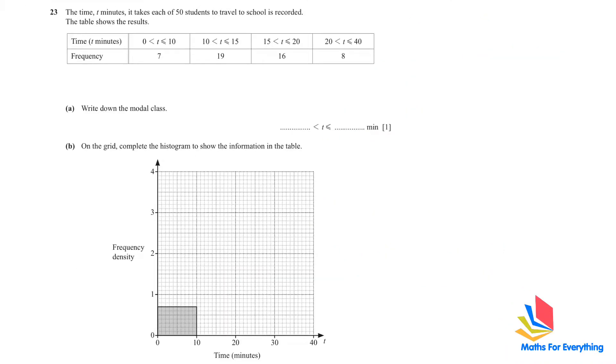Question number 23 is a statistics question. The time t it takes each of 50 students to travel to school is recorded. The table shows the results. We have been given the time and the frequency. Write down the modal class. Modal means the most repeated number, so it is 19 and the class is 10 to 15. Next, on the grid, complete the histogram to show the information in the table.